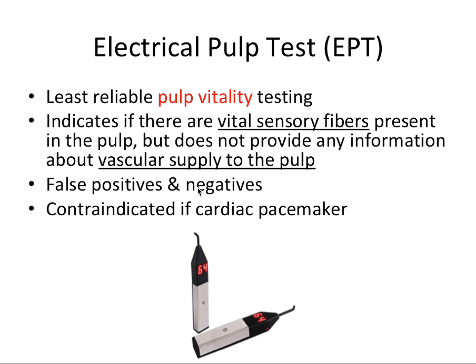The EPT, as with the cold test, can have false positive and false negative results. Examples of a false positive would be accidentally touching the gingiva, or if the tooth is not isolated and dried properly. A false negative example would be a recently traumatized tooth where nervous tissue is not responsive, or excessive calcification of a canal where the pulp may not respond normally although the tooth is plenty vital. This test is also contraindicated if the patient has a cardiac pacemaker.